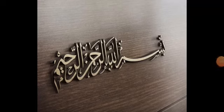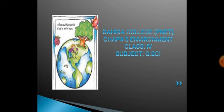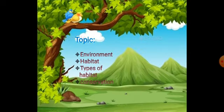Bismillah ar-Rahman ar-Rahim. Assalamu alaikum students. I hope you all are good. Stay home and save your lives. It's your general science period and today we are going to start a new chapter, Chapter number 5: Environment. Today's topics are Environment, Habitat, Types of Habitat, and Conservation.